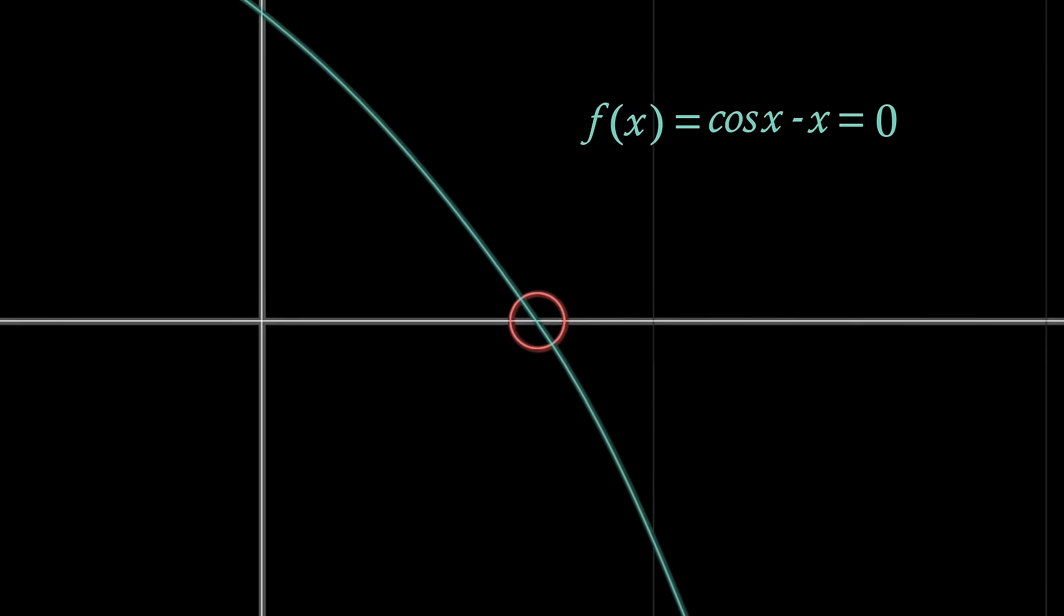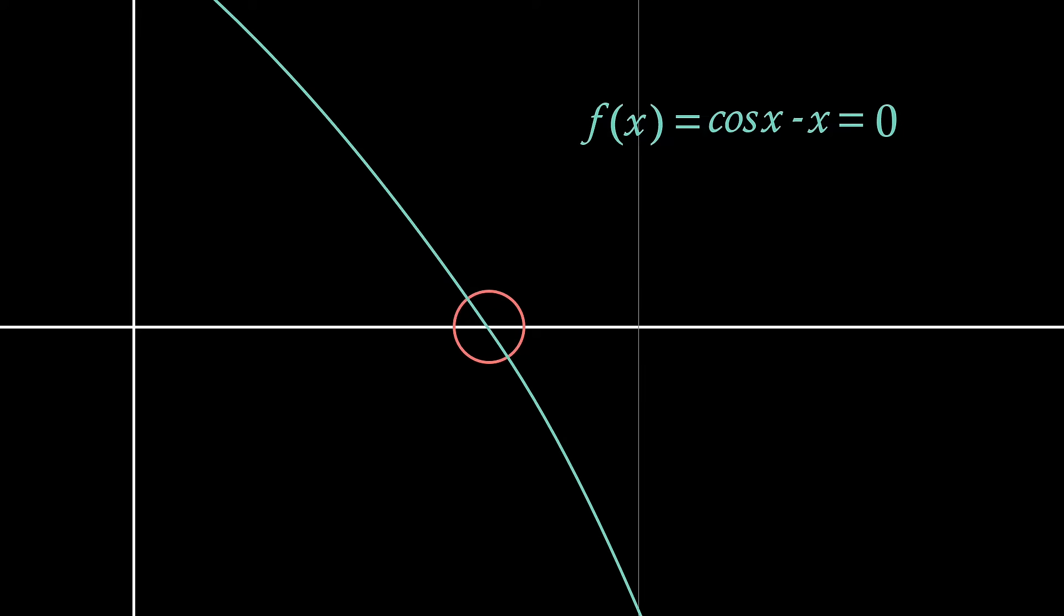Now, say that we take a function, f of x equals cos x minus x. We clearly see that this has a root, but we can also see that the equation cos x minus x equals 0 cannot be solved using standard techniques. The root here sits between 0 and 1, so if we take this as the initial interval of where our root sits, known as the bracket of our root, then we can contemplate how we could find smaller or more accurate brackets of the root.